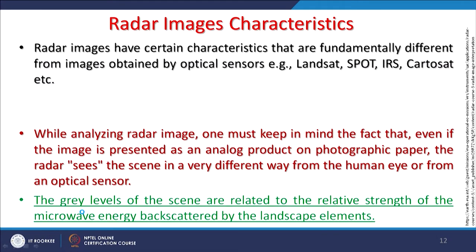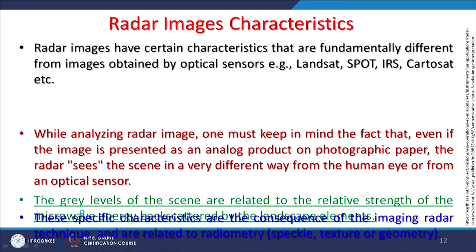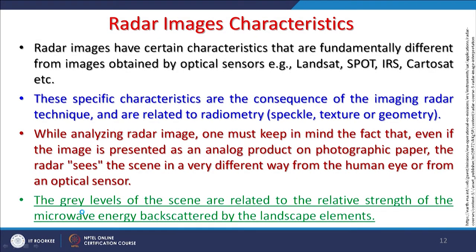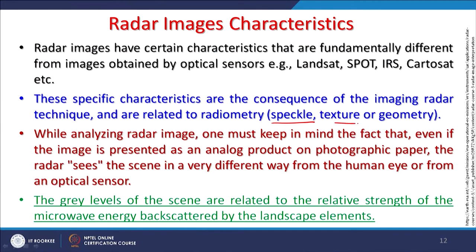Radar images have certain characteristics fundamentally different from images obtained by optical sensors such as Landsat, SPOT, IRS, or Cartosat. The analysis and interpretation of radar images is completely different from optical sensors. These specific characteristics are a consequence of imaging radar technology and are related to radiometry, speckle texture, and geometry.